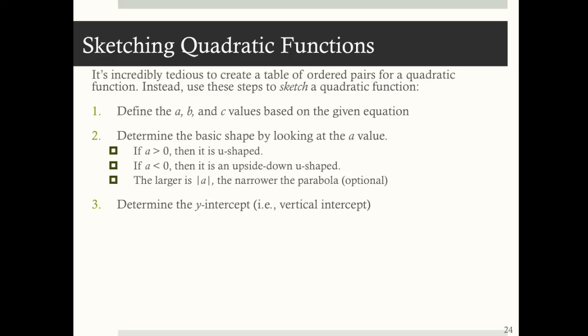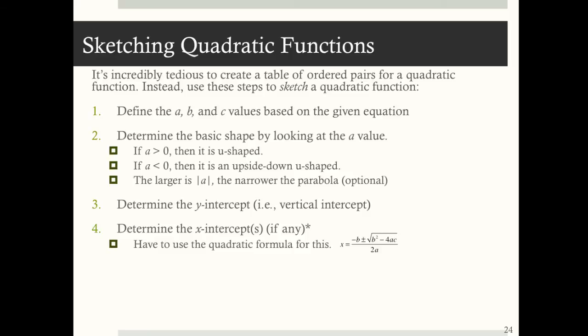Third, determine the y-intercept, which is also known as the vertical intercept. Four, determine the x-intercept or intercepts, if any — this is probably going to take the most time, because it's not as straightforward as finding the x-intercept on a linear equation. If we want to determine the x-intercept, we have to use the quadratic formula: x is equal to negative b plus or minus the square root of b squared minus 4ac, all divided by 2a.